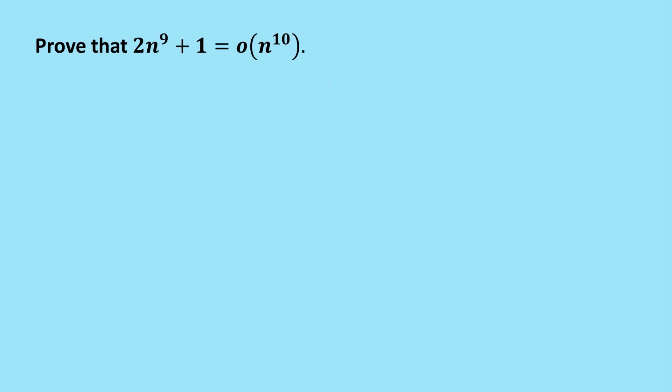This gives us the way to prove it. We just create the limit as n goes to infinity: take 2n^9 + 1 in the numerator and n^10 in the denominator. Now, this is not a video about doing limits, so I'm just going to cut to the chase and say